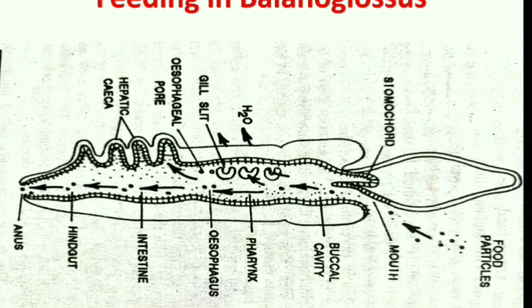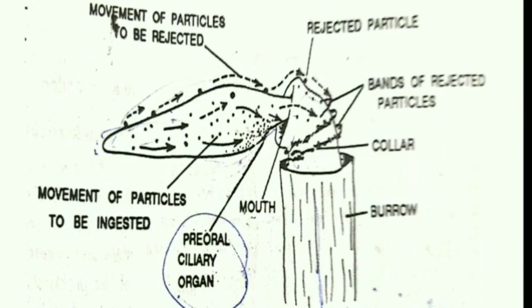Suitable food goes to the pharynx food chamber, then esophagus where it is molded into a cord with mucus, and then to the intestine. In the hepatic region, hepatic caeca release digestive enzymes carrying out digestion. Undigestible remains mix with sand and silt, pass to the post-hepatic region, and are expelled through the anus as fecal castings. Movement of food is slow and done entirely with the help of cilia throughout the alimentary canal.